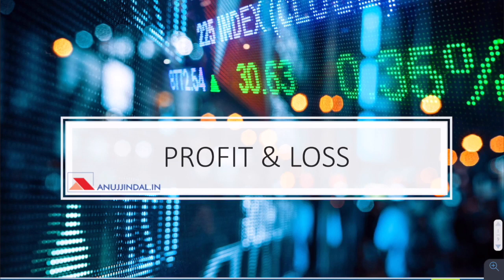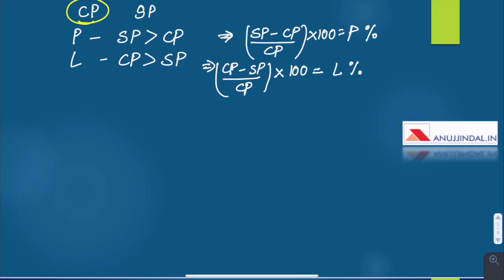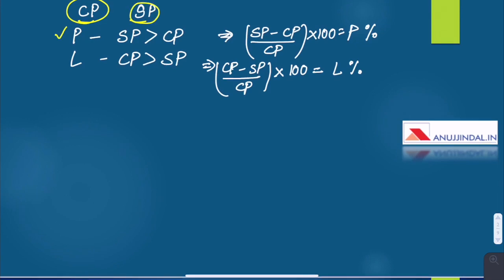Before getting started with questions, let us quickly revise some basic concepts. As we all know the concept of CP and SP, that is cost price and selling price. Profit is when SP is greater than CP, loss is when CP is greater than SP, and these are their respective formulas.